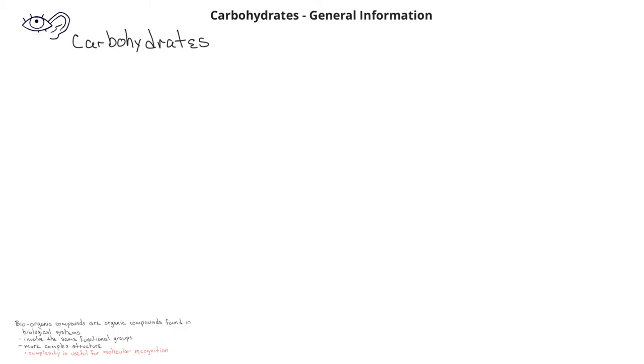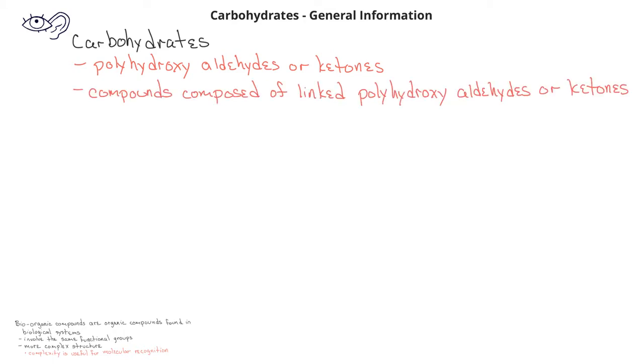Carbohydrates are the first type of bioorganic compounds that we'll study. Carbohydrates can be polyhydroxy aldehydes or ketones, or they could be compounds composed of linked polyhydroxy aldehydes or ketones. Carbohydrates are the most abundant class of biological compounds, making up about 50% of the biomass.